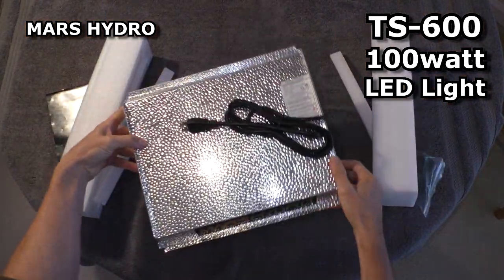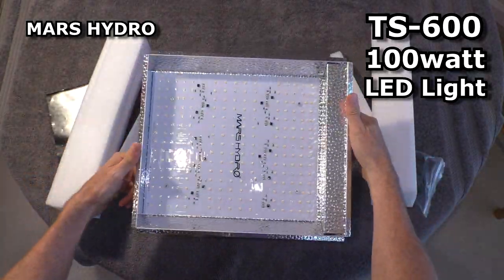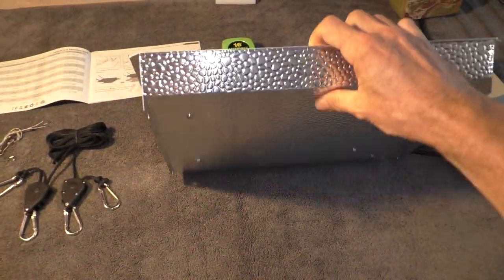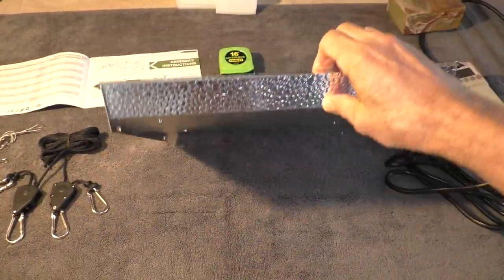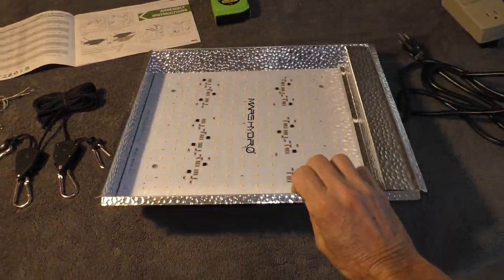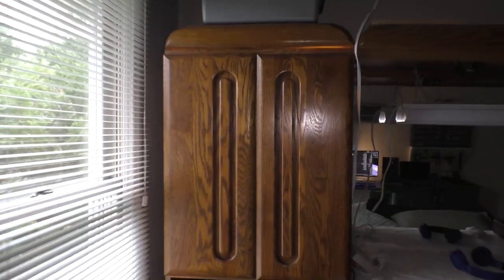This is the new Mars Hydro TS 600. It's a 100 watt LED grow light that I'm going to use for my seedling growth phase.